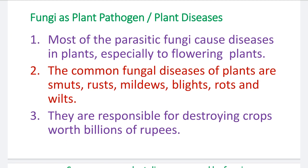First aspect: fungi as plant pathogen. As you know, there are two types of fungi — saprophytic and parasitic. Saprophytic fungi grow on dead and decaying organic material. On the contrary, parasitic fungi can only grow on living organisms — plants, animals, insects, human beings — and cause considerable loss to them. The first aspect is fungi as plant pathogen, meaning the disease-causing organism is called a pathogen.